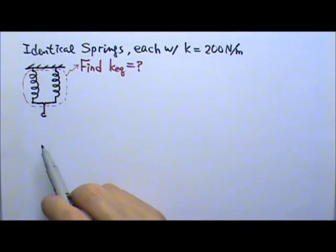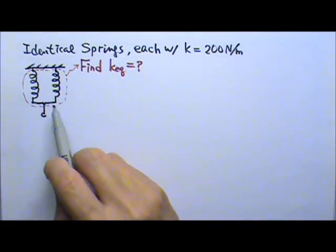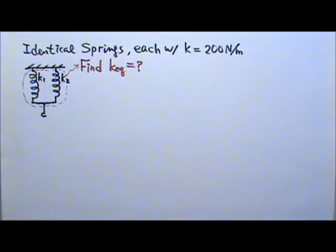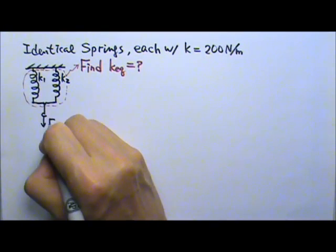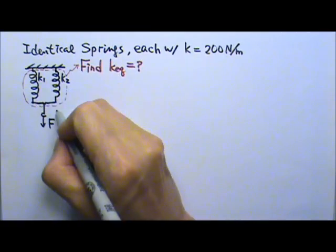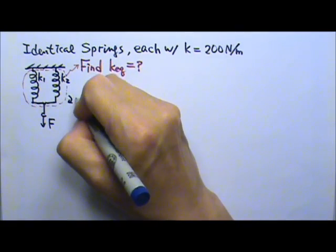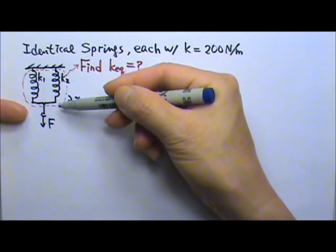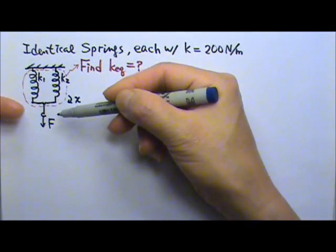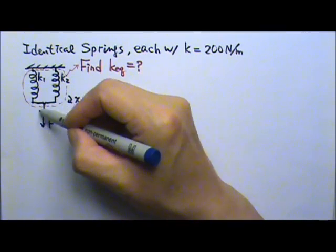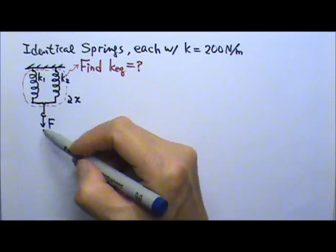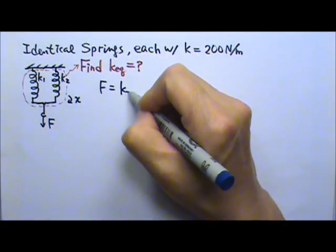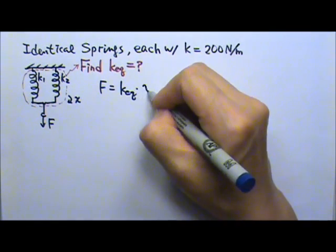Let me first derive a general equation for springs in parallel. Say the two springs have spring constants K1 and K2. If I pull with a force F and the combination stretches by a distance x, this means the two springs each stretch by x. F equals Kx. If we look at the combination, the pulling force is F, so F equals the K equivalent times the stretched amount x.